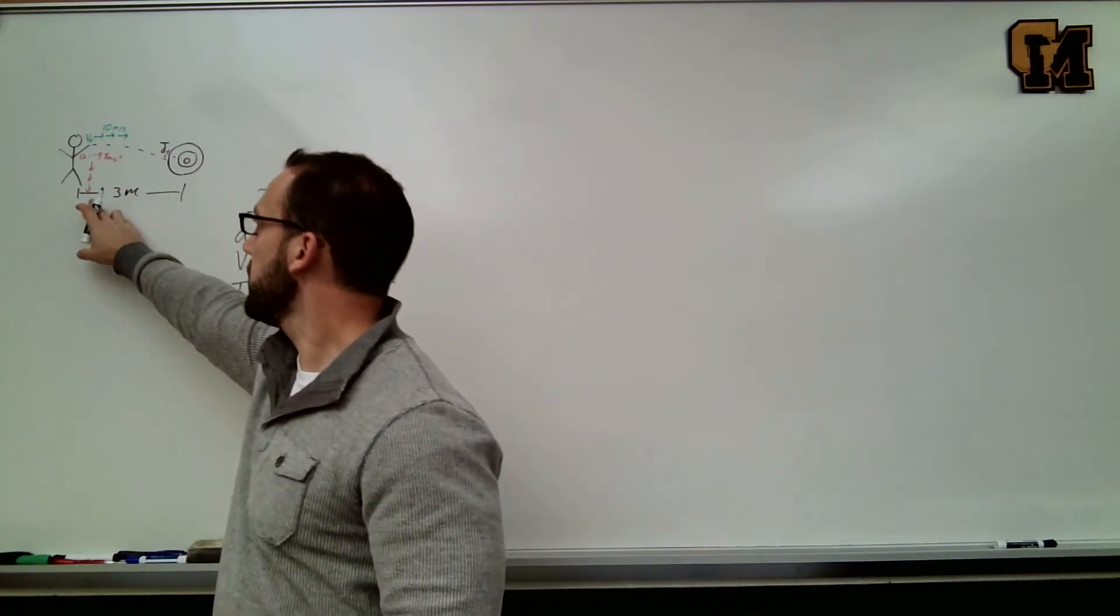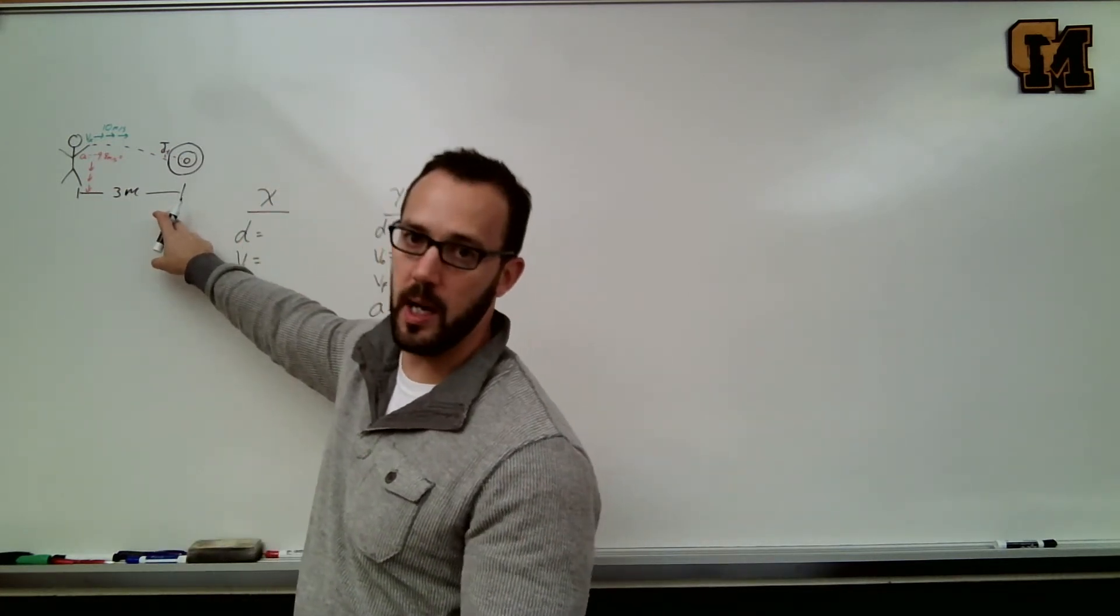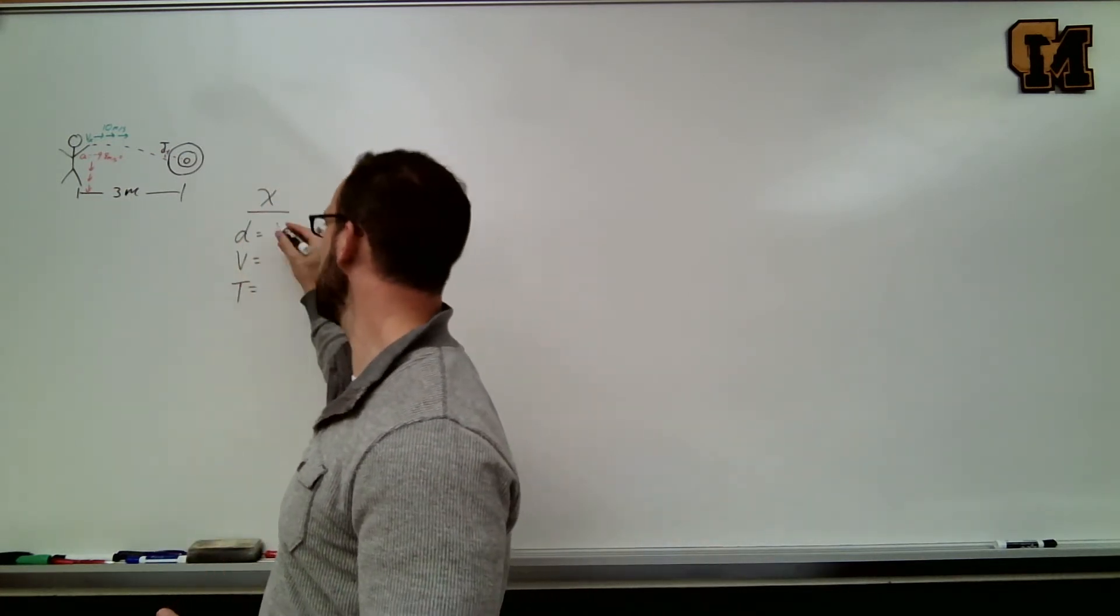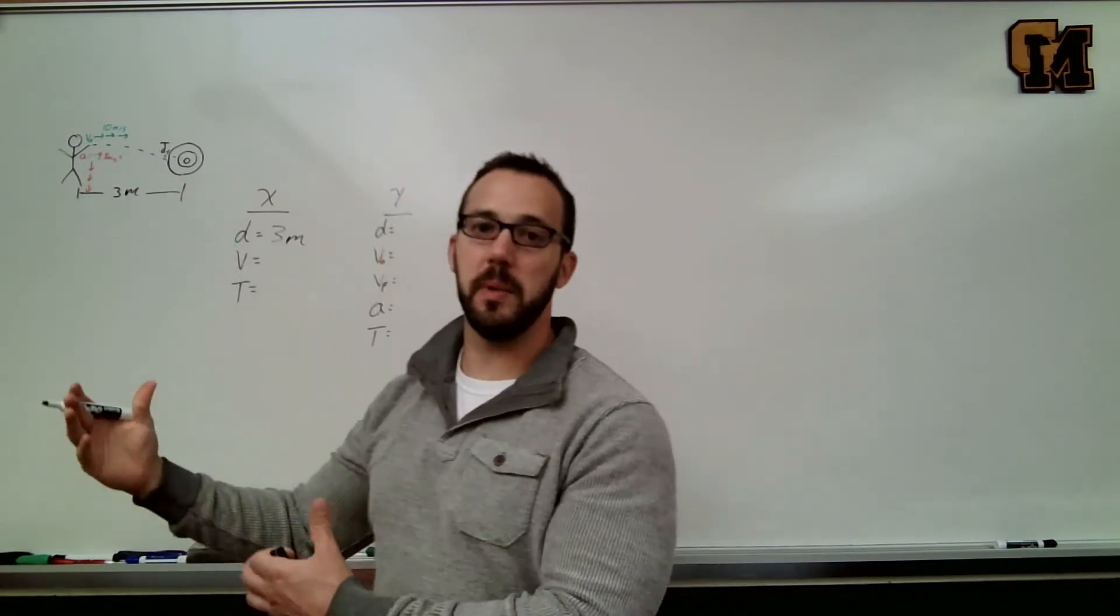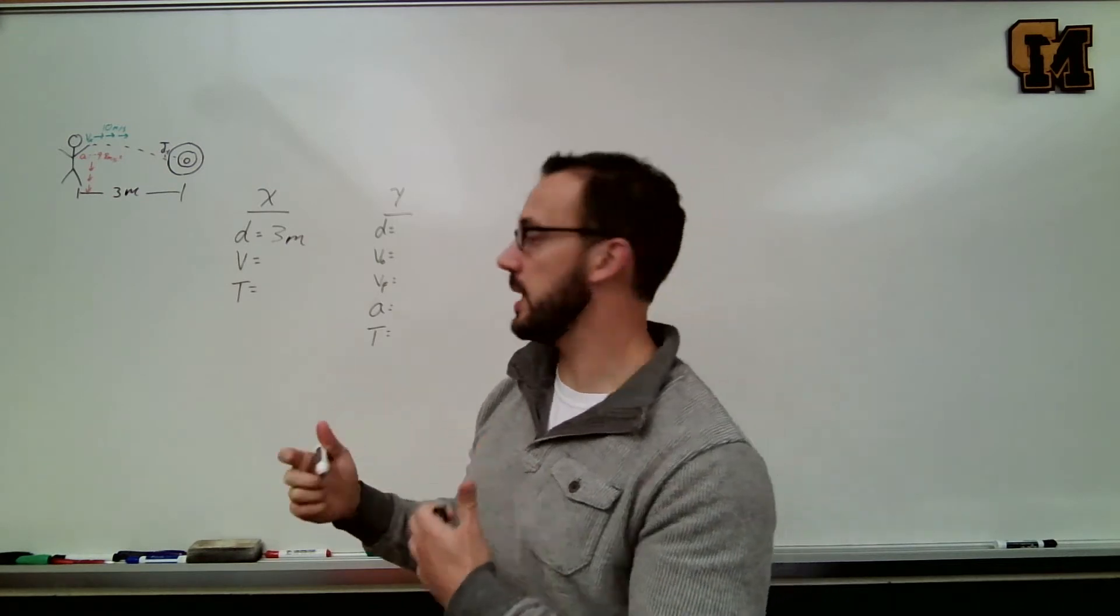We know the dartboard is three meters away horizontally, so that's an x displacement. We know we throw it 10 meters per second to the right, so that's an x velocity.